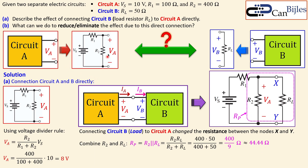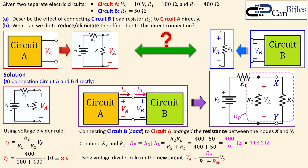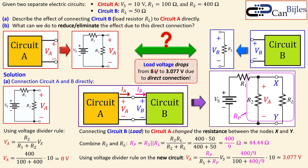So R2 drops from 400 ohms all the way down to 44.44 ohms — quite a reduction. Applying the voltage divider rule to the new circuit, VA equals RP over R1 plus RP, times VS. That will definitely produce a lower voltage. The voltage drops from 8 volts all the way to 3.077 volts due to the direct connection. That is a problem — just connecting one resistor made a huge change in our load voltage.